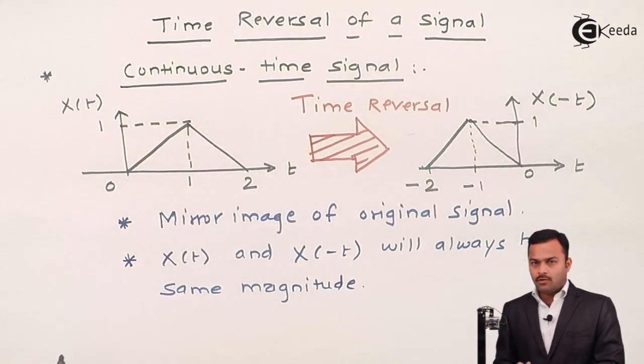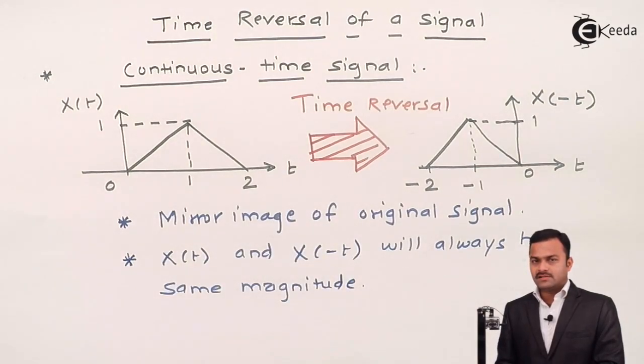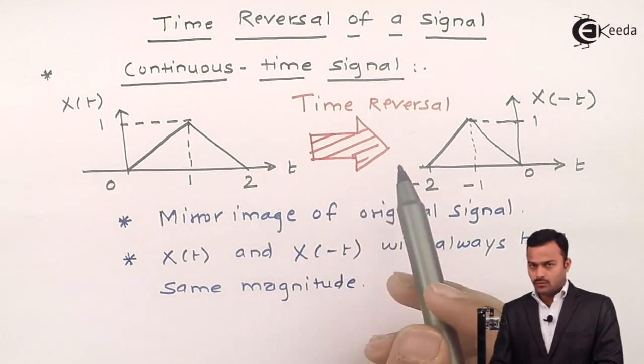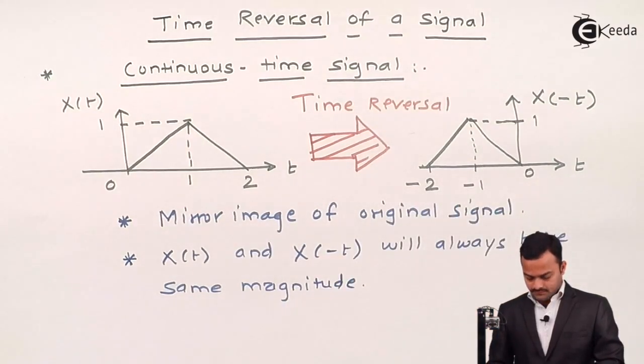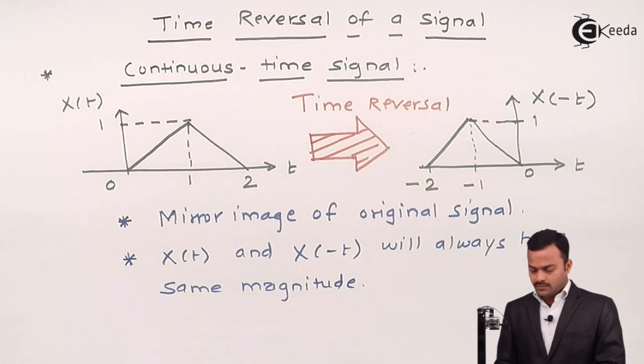So, it is a simple operation where we can say, by doing a time reversal of a signal, we get mirror image of the original signal. Same thing can be hold true for discrete time sequence as well.